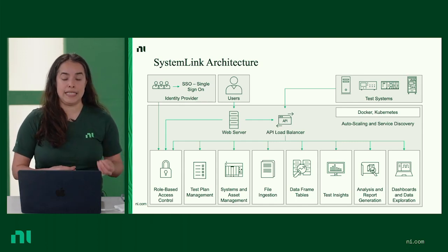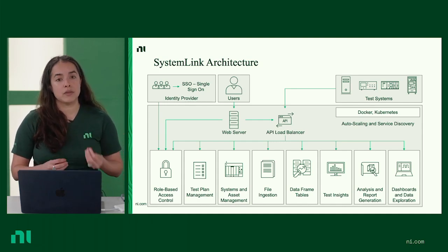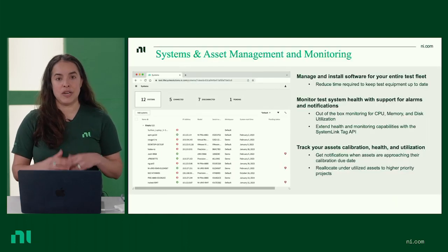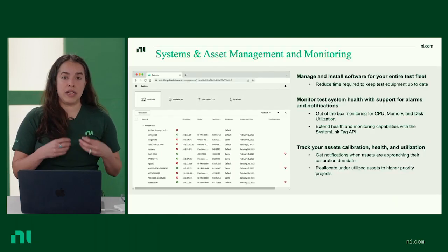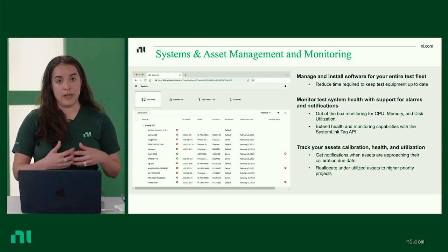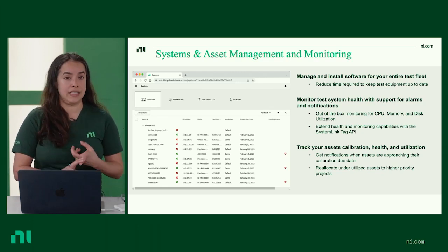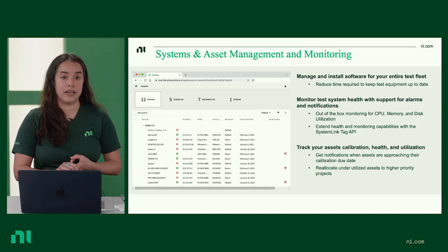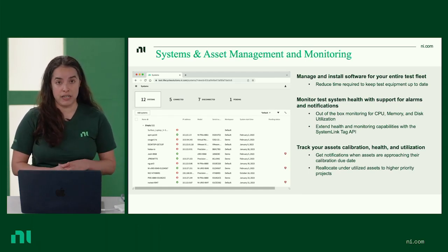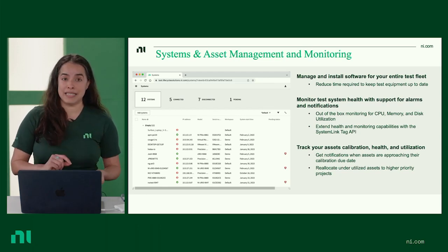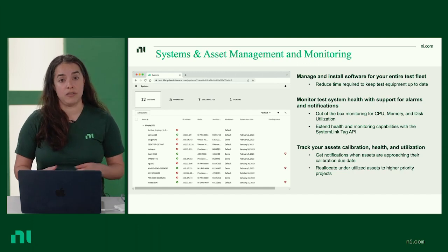The next capability is test plan management, where we can maintain and schedule maintenance and calibration work orders, as well as monitor tests in real time and critical resources such as power consumption. Moving to systems and asset management, you can view all of your connected test systems — active and disconnected. You can click on each individual test system to see installed assets, software versions, file history, and calculate asset utilization to optimize your test processes.